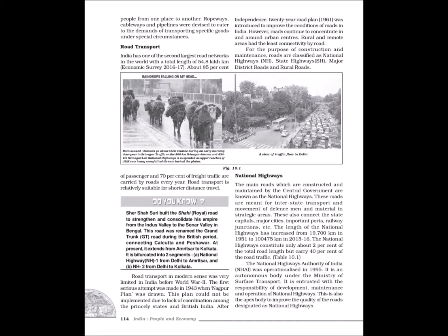Road Transport: India has one of the largest road networks in the world, with a total length of 33.1 lakh km (2005). About 85% of passenger and 70% of freight traffic are carried by roads every year. Road transport is relatively suitable for shorter distance travel. Road transport in modern sense was very limited in India before World War II. The first serious attempt was made in 1943 when the Nagpur Plan was drawn, but could not be implemented due to lack of coordination among the princely states and British India. After independence, a 20-year road plan of 1961 was introduced, however roads continued to concentrate in and around urban centers.